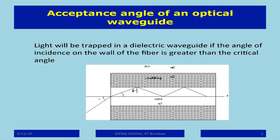This is the figure I was missing in the morning. In an optical fiber, you have a core with a higher refractive index than the cladding, and air outside with refractive index 1. Supposing there is an angle i at which light is incident, it gets refracted and comes to the other surface interface at an angle phi, where phi equals 90 minus theta.